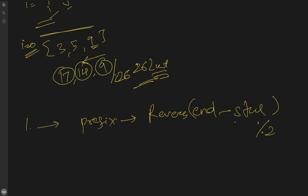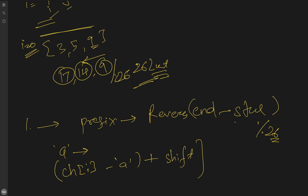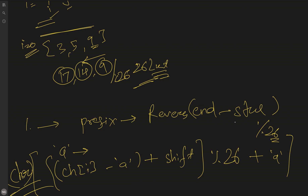We also take modulo 26 while building the prefix sum. Then we need to update each character. The formula is: take character ch[i], subtract 'a' to get a value from 0 to 25, add the shift integer for that index, take modulo 26 to handle wrap-around, then add back 'a' to form the character. Finally, type cast back to char. That is the formula to shift characters.